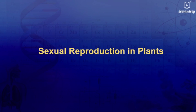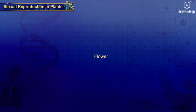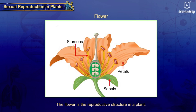Sexual Reproduction in Plants. The flower is the reproductive structure in a plant. The different parts of a flower are sepals, petals, stamens and carpels.